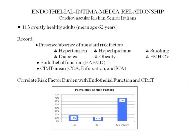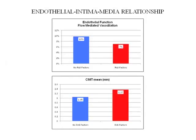We correlate risk factor burden with endothelial function and intermediate thickness. Among these 113 patients, 70% had two or more risk factors, 12% had one risk factor, and 17% had no risk factors. In individuals with no risk factors — nothing to compromise nitric oxide generation — they vasodilated 10%, which was normal. Those with risk factors had compromised endothelial function, vasodilating only 7%.